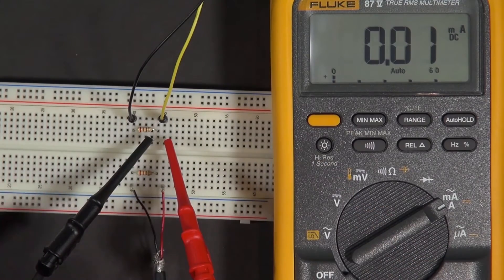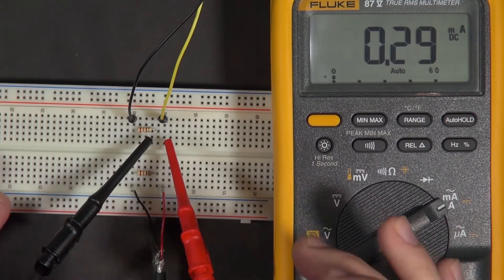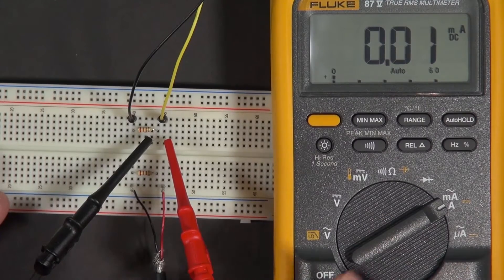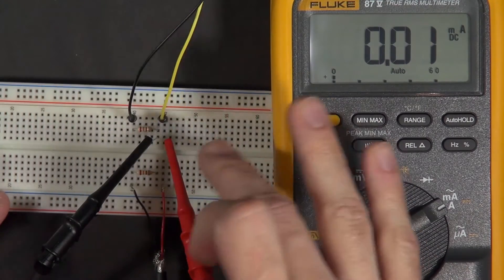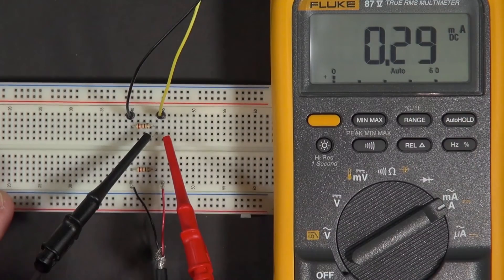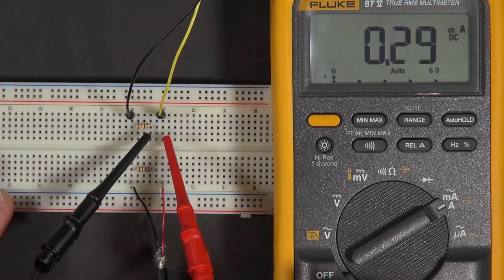That right there is basically the explanation of why the LED on the top circuit was so much less bright than the LED in the bottom circuit. The voltage is the same, the resistance is the same, but the current is almost 100 times less. So the LED is much less bright.